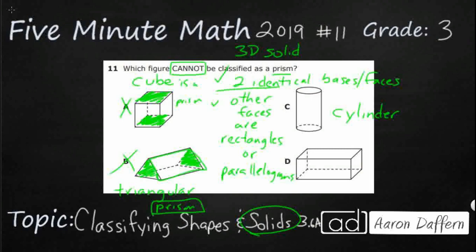And do we have two identical bases or faces? Well yes we do. We've got circles, cylinders are like Coke cans, soup cans. Yes, they definitely have two identical bases or faces.